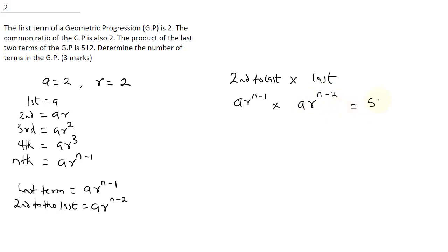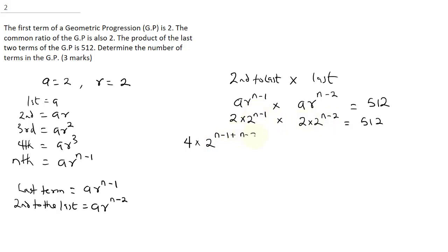They said it equals 512. Remember A is 2 and R is 2, so we punch in our values: 2 times 2 to the power N minus 1, times 2 times 2 to the power N minus 2, equals 512. So 2 times 2 gives us 4, and using the indices law we add the exponents: N minus 1 plus N minus 2, giving 4 times 2 to the power 2N minus 3 equals 512.